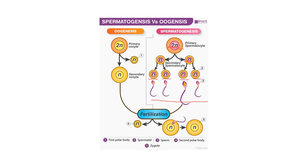In oogenesis, something different is happening. We again start with a diploid oocyte and it goes through the first meiotic division. Yes, we have half the chromosome numbers, but notice the difference in size between the two resulting cells — one cell gets all the cytoplasm and will continue its journey to becoming an ovum. This smaller cell is what we call a polar body. A polar body is essentially a cell that is not going to become an egg cell; it doesn't have enough cytoplasm or the cell machinery necessary, and it degenerates.